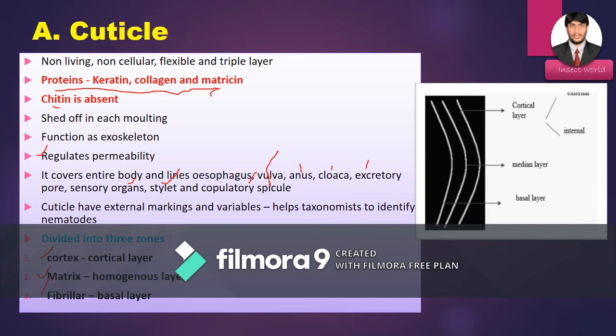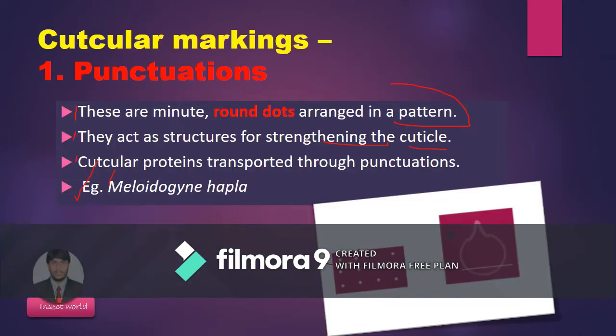On the outer side of the cuticle there are markings known as cuticular markings, which help in identifying nematodes. The cuticle is divided into three zones: the cortex also known as the cortical layer, the matrix also known as the homogeneous layer, and the fibula also known as the basal layer.